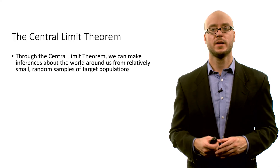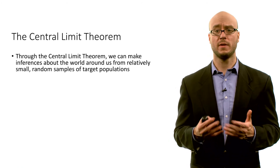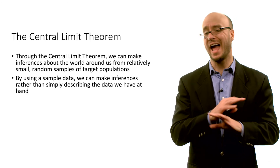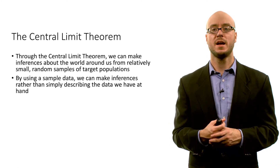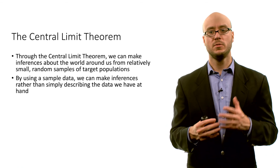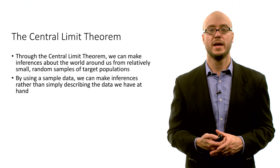The central limit theorem is very powerful because it tells us we can make inferences about the world around us from relatively small random samples of target populations — we don't have to conduct a census. We can just collect a random sample, and since we know the properties of the sampling distribution, we can use it to make inferences about a population based on representative data gathered from a random sample. For example, we typically want to know about an entire population — all Europeans, all birds, and so forth — but since that's expensive, we can use a particular sample to make generalizations about the population.